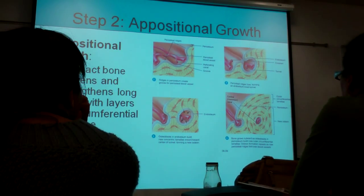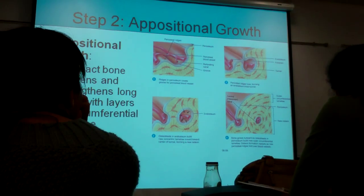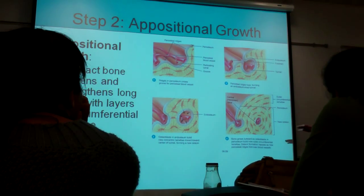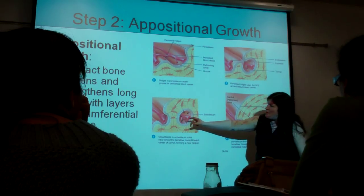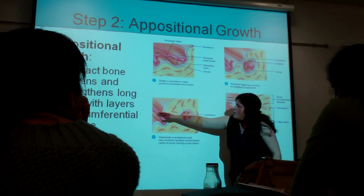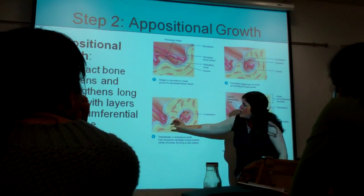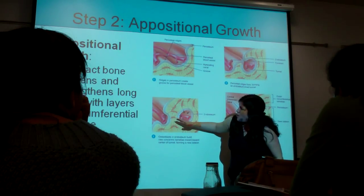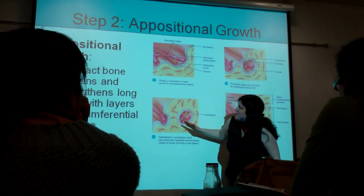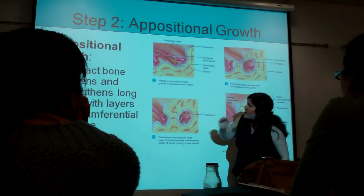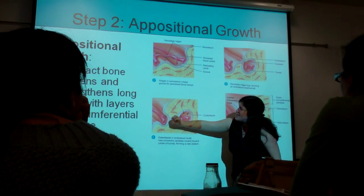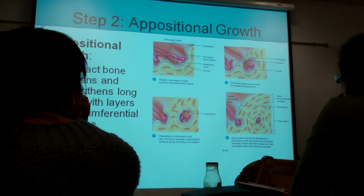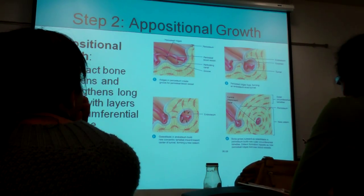In this appositional growth, concentric lamellae encircle the arteries that run parallel to the shaft of the bone, and these concentric lamellae basically envelop them.